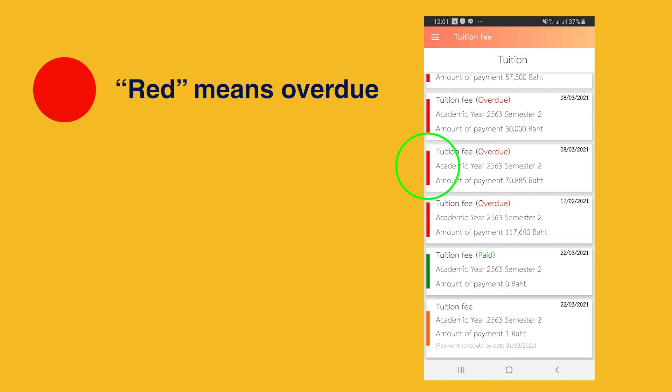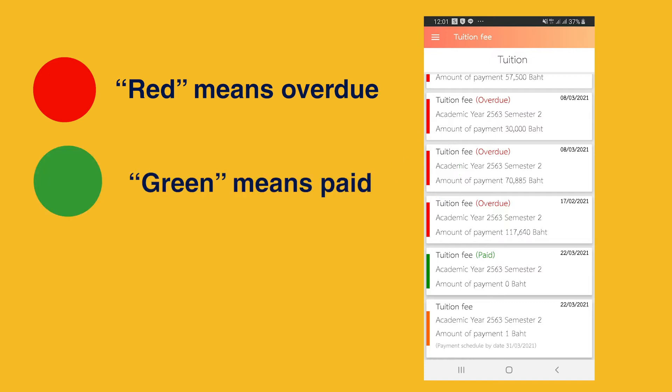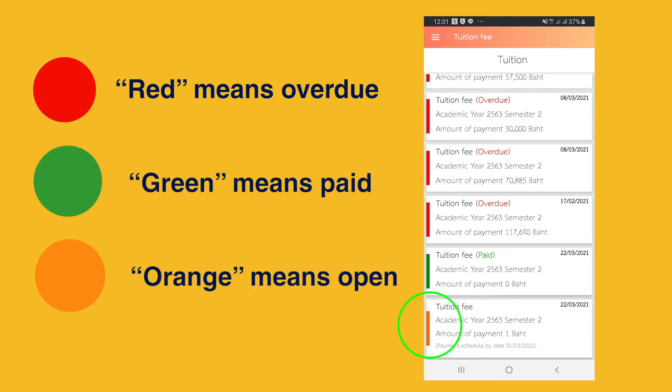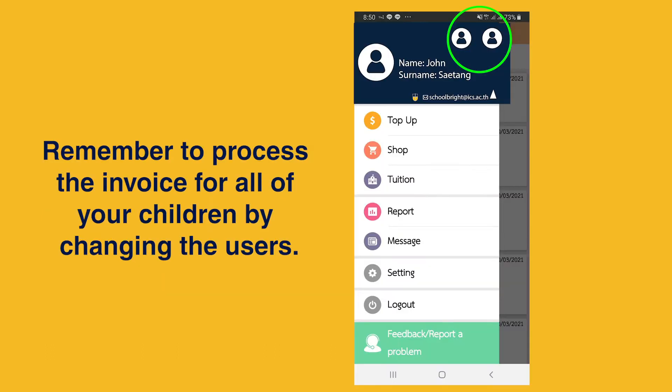Red means overdue. Green means paid. Orange means open. Remember to process the invoice for all of your children by changing the users.